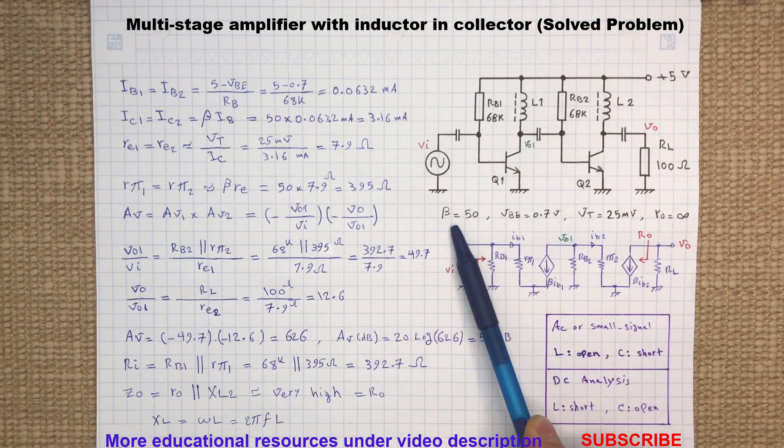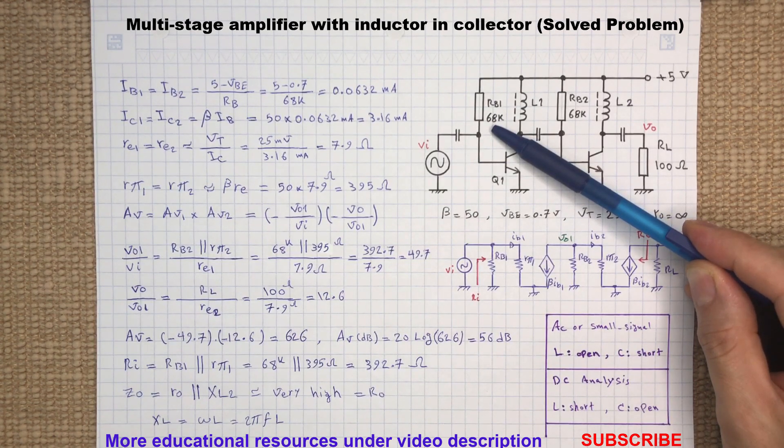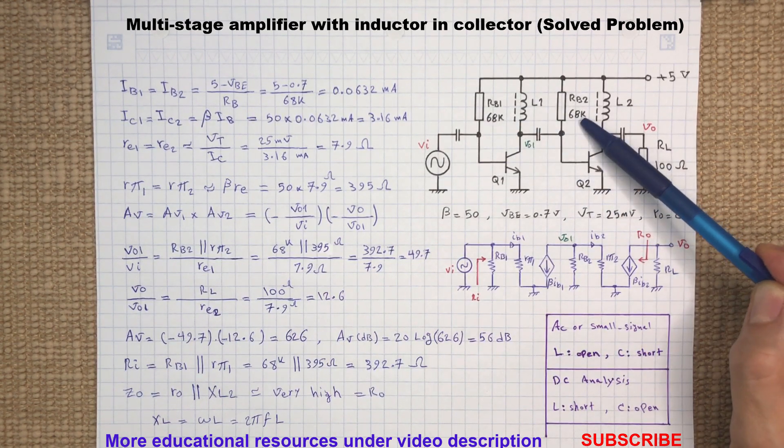As you can see here, both transistors have a similar current gain beta, and they are fed from 68 kilo ohm resistors.